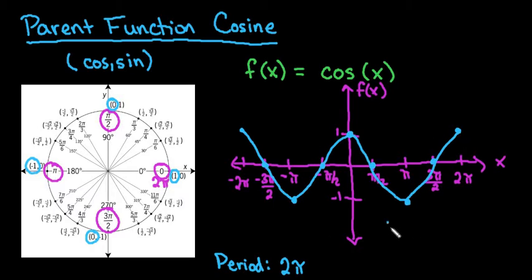So the domain for the parent function is negative infinity to positive infinity because I can keep doing this forever and ever. There are no restrictions. The range only goes as high or low as these points here. So negative 1 is my low point. Positive 1 is my high point. So my range goes from negative 1 inclusive to positive 1.